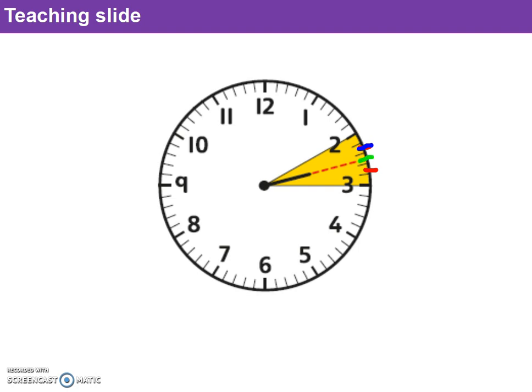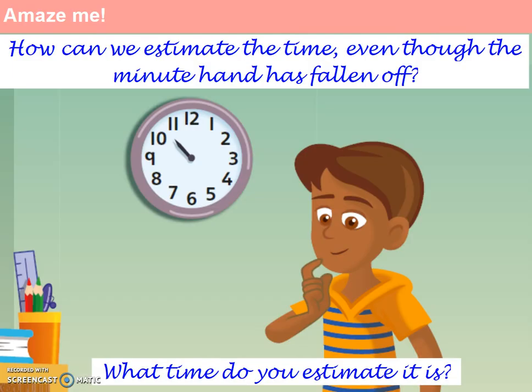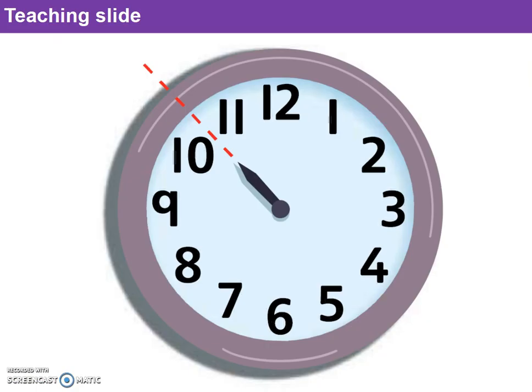Looking at question 1B — what time do you estimate it is? We can see that the hour hand is between 10 and 11. The hour hand is after 10 but before 11, and it's about halfway between them. So we're dealing with 10 something, and in this case it's half an hour past 10, or 10:30.